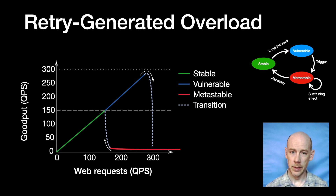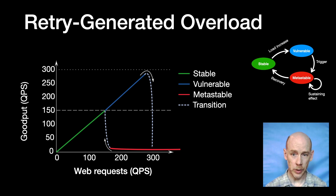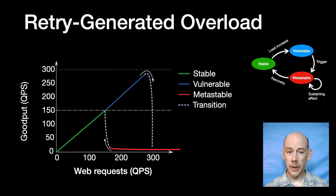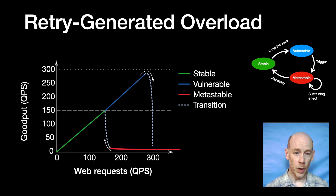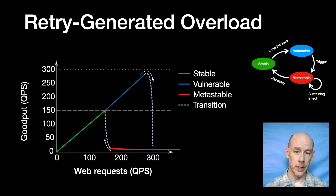But we're now operating in a vulnerable state. When the offered load goes above 150, even a short-lived burst of errors can push the system into a death spiral. Errors lead to retries, which push us into database overload, which leads to more errors, which leads to more overload, and so on. Goodput collapses and we get stuck in a metastable failure state. Once we enter this state, errors won't subside until the client load drops below 150 qps. This death spiral will definitely happen when the offered load goes above 300, but it can also happen at lower loads — for example, if we're normally running at 70% of theoretical capacity, a temporary network failure can cause us to get stuck.